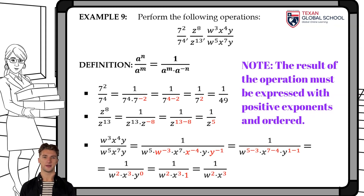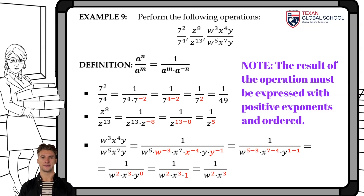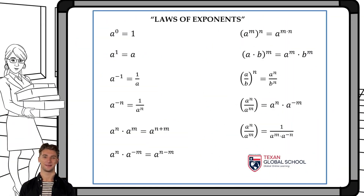Finally, w cubed x to the fourth y over w to the fifth x to the seventh y is simplified as 1 over w to the fifth times w to the negative 3, times x to the seventh times x to the negative 4, times y times y to the negative 1. Subtracting exponents and simplifying using previous definitions, we get a result of 1 over w squared times x cubed. It is important to note that the result of algebraic operations must be expressed with positive exponents and ordered.